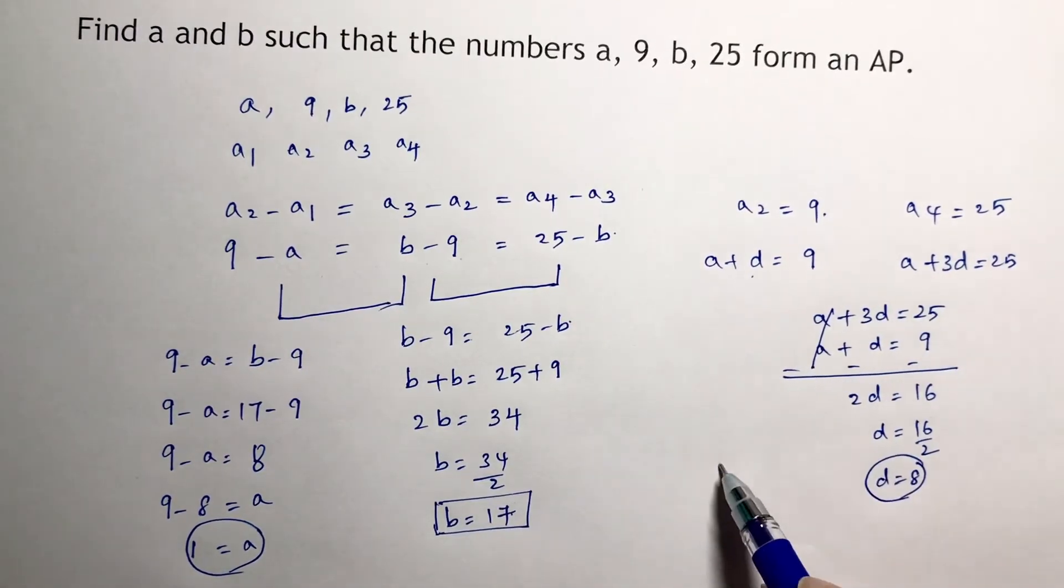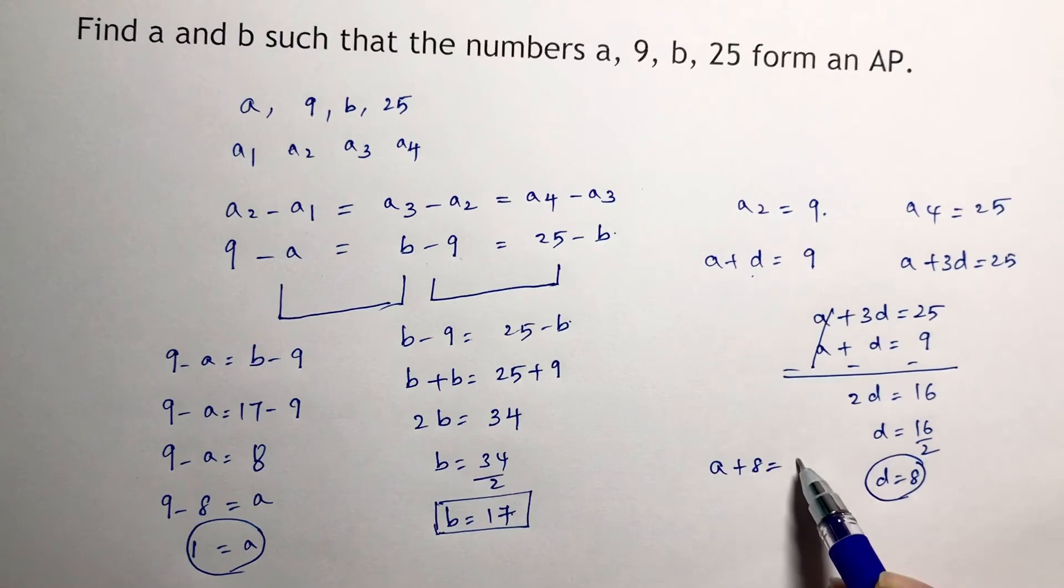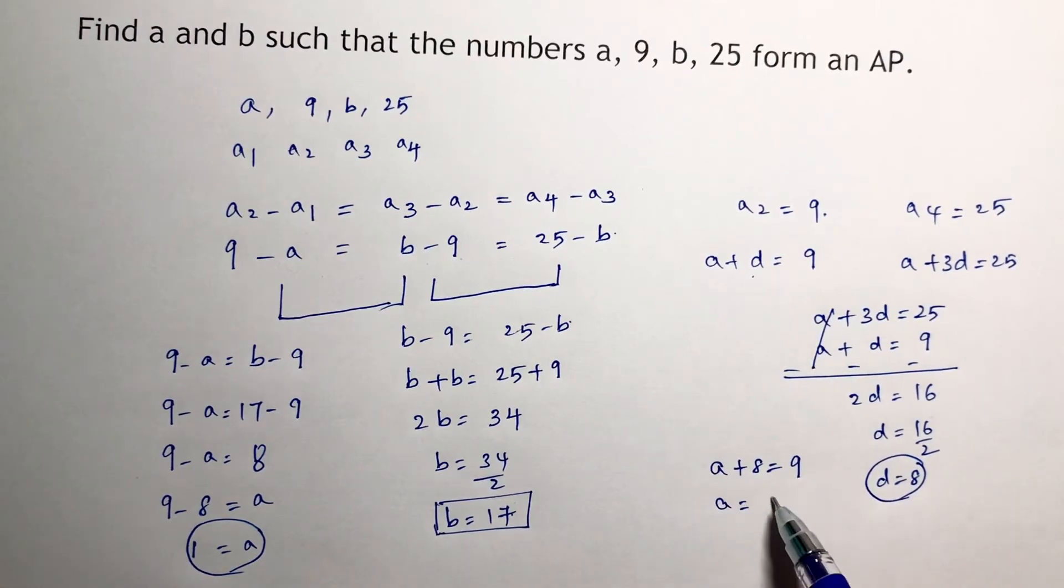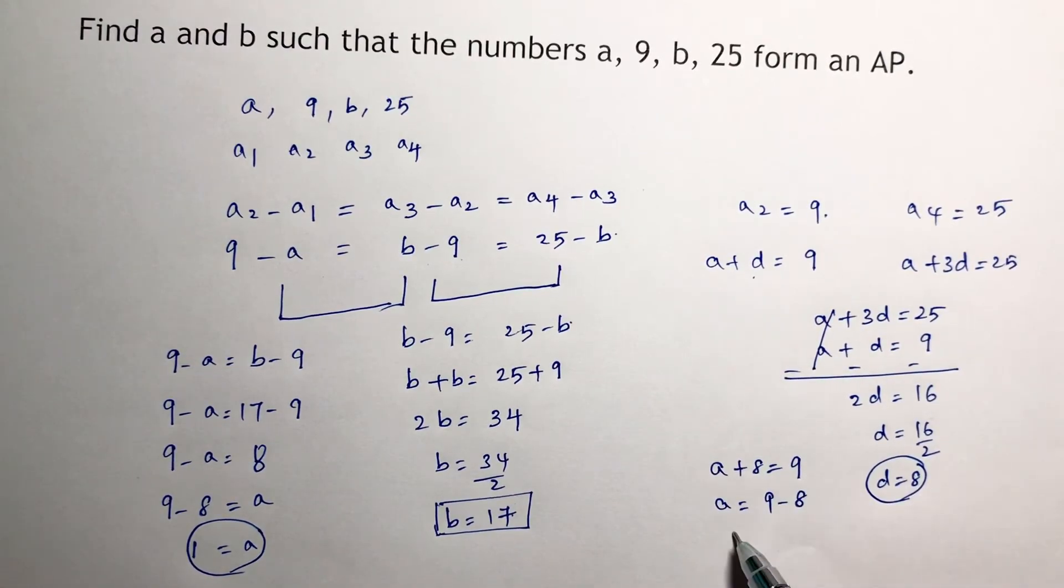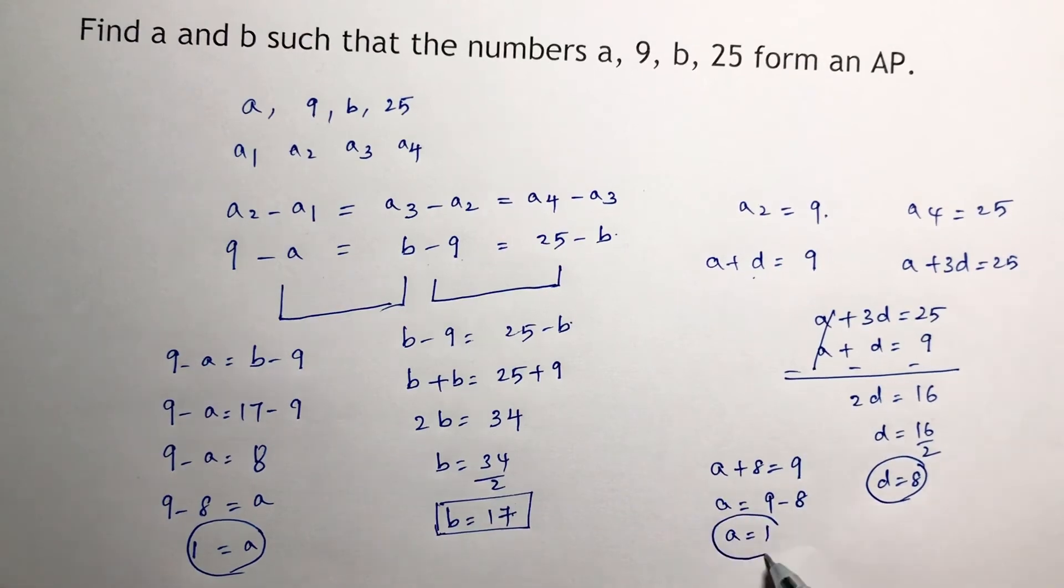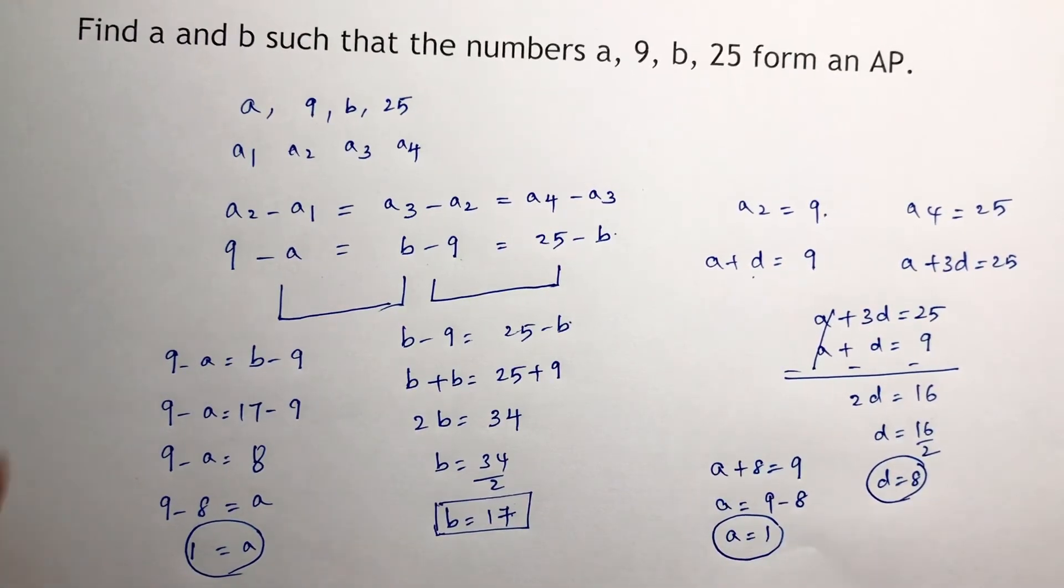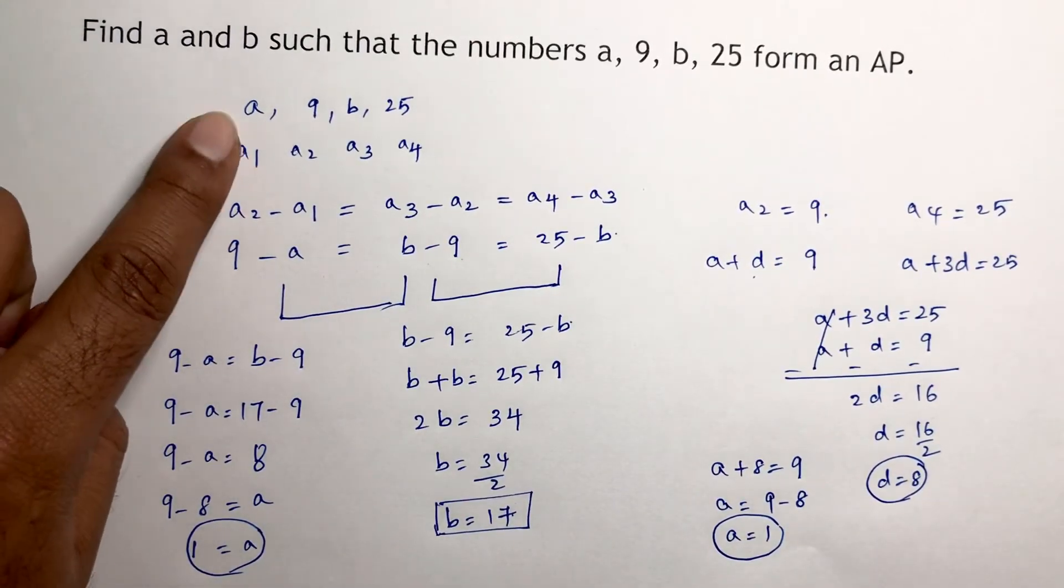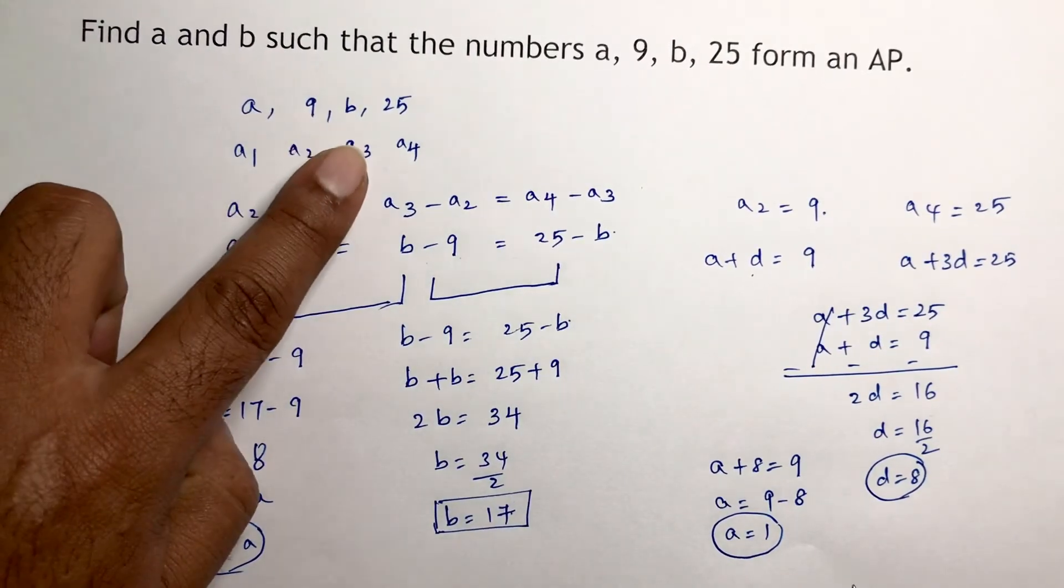Now if I substitute the value of d here, a plus 8 equals 9, so a equals 9 minus 8, which means a equals 1. So a is only the first term. Now I need to calculate b.